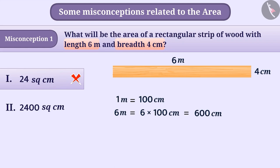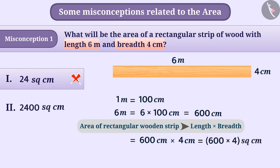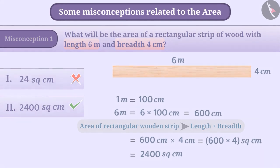In this way, the area of the rectangular wooden strip will be: length × breadth = 600 cm × 4 cm = 600 × 4 = 2400 square centimeters. Hence, option 2 is the correct answer.